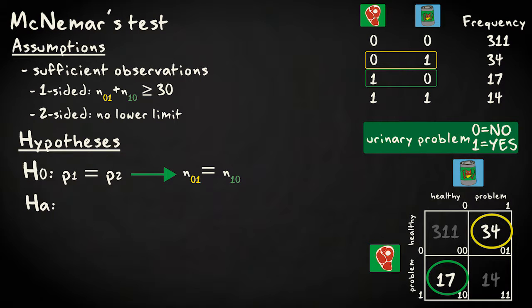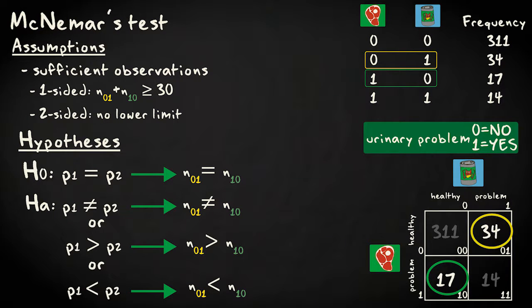Possible alternative hypotheses are that the proportions are unequal, or that the second proportion will be greater, or smaller, than the first. The interpretation depends on how you define the groups and combinations.